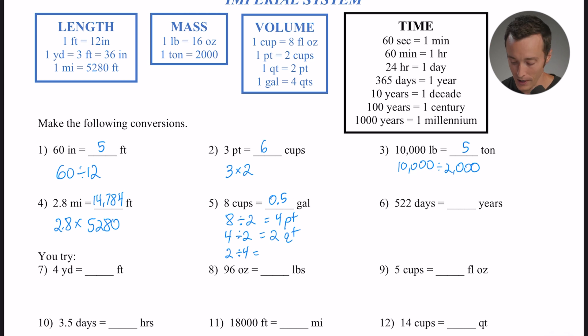Okay, how about one more like that? 522 days, now we're talking about time, and we want that in years. Well, as we all know, there's 365 days in a year. So really what this is asking us to do is take 522 divided by 365. And if you grab a calculator, that's going to be 1.43 years. Okay, so before we do anything else, I want you to go ahead and pause the video and try numbers 7 through 12.